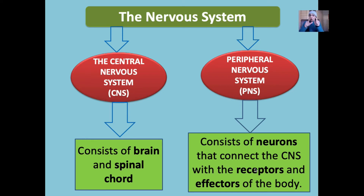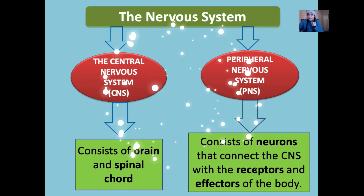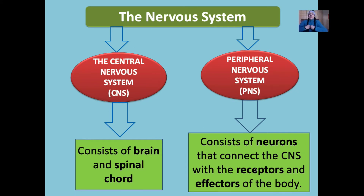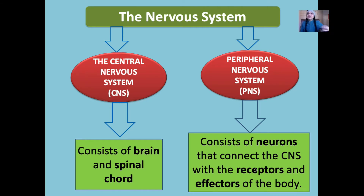Why is it so important that the CNS and PNS be linked together? Both of these systems need to be in communication with one another so that we can react to any changes taking place in our body's external environment. For example, if there is an explosion, we don't have to stand and wait — we can react by running away. That message needs to reach our muscles and glands, allowing us to run away from this dangerous situation. There has to be a link between the CNS and the PNS.